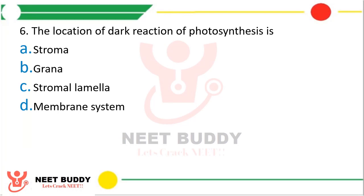Question 6. Location of dark reaction of photosynthesis is option A: Stroma, option B: Grana, option C: Stromelamella, or option D: Membrane system. The correct answer is option A, that is stroma.